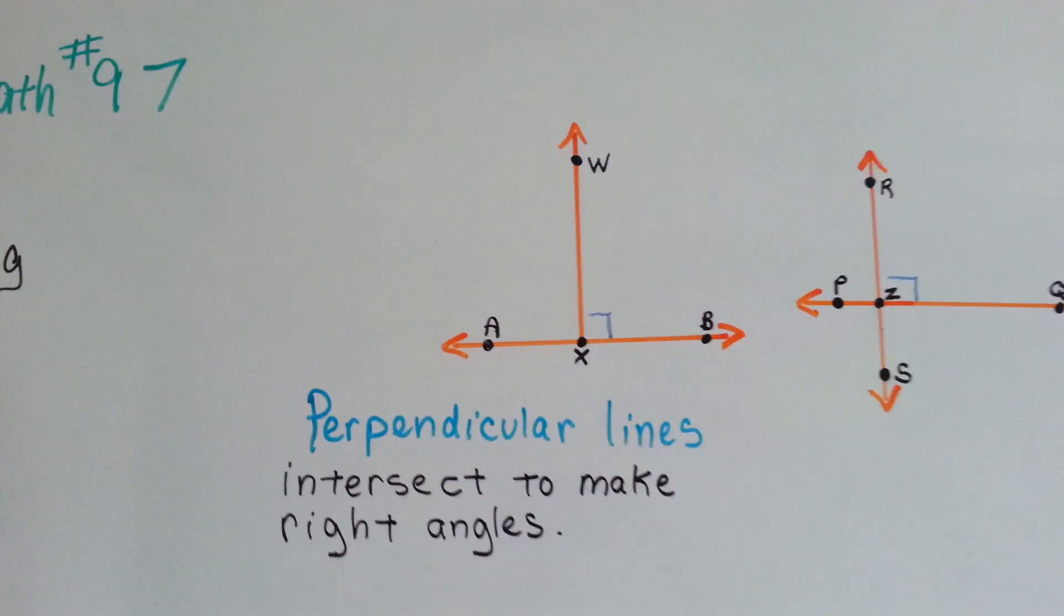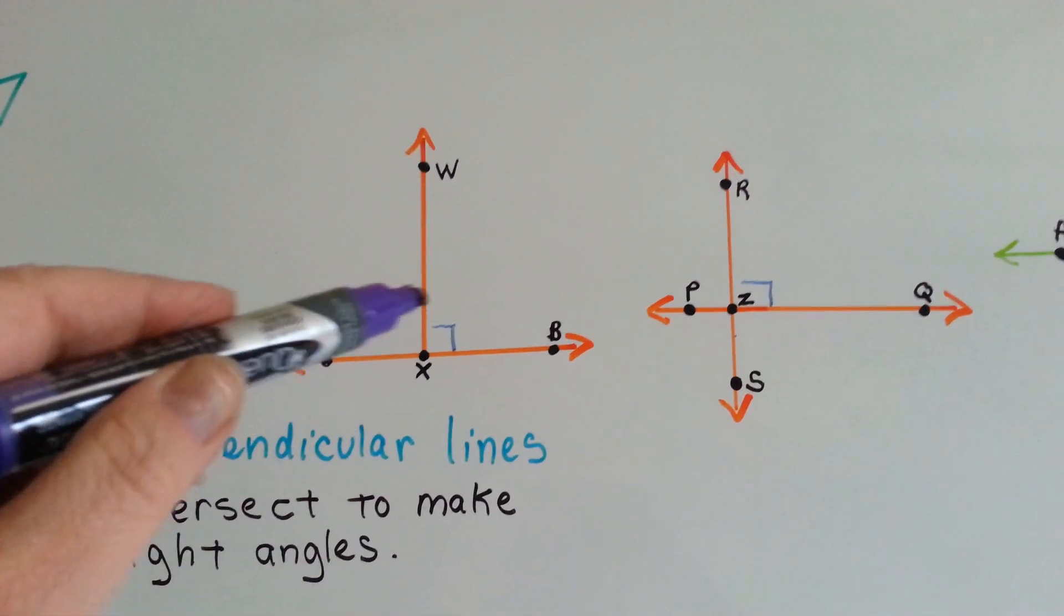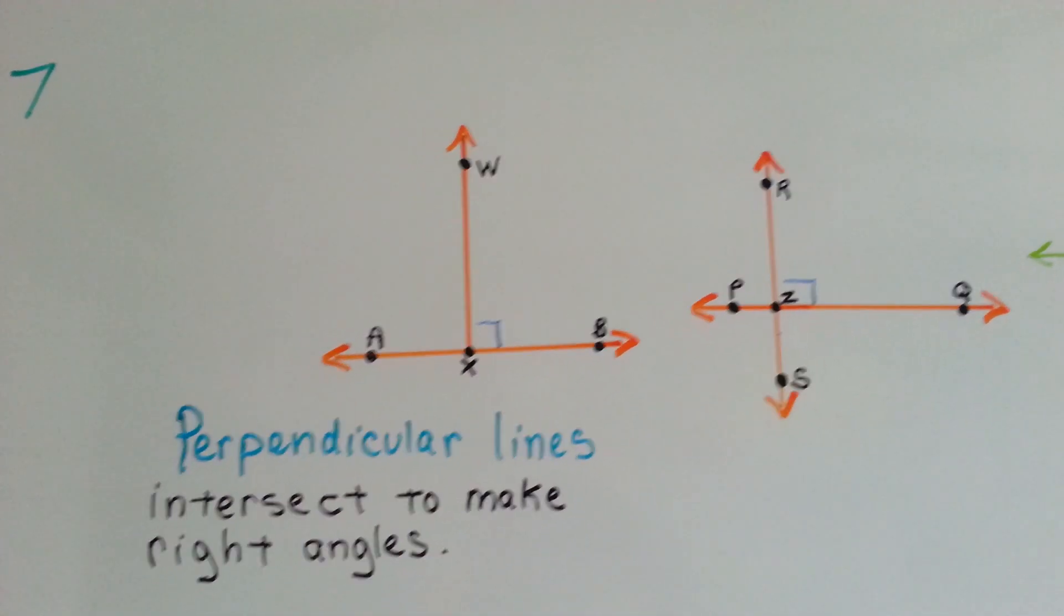Perpendicular lines intersect to make right angles. See how the corners make like a box shape? That's a right angle.